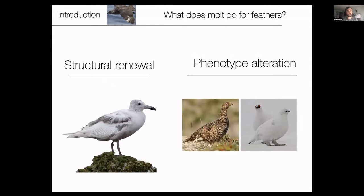A couple of things to establish when talking about molt: what does molt do for feathers? Molt, as we saw with the skua, can work for structural renewal — just replacing worn feathers. But molt can also serve for phenotype alteration. By phenotype I mean the outward appearance and structure. So does the color change? Does the shape or length of the feather change, or does the pattern change? So molt, in addition to renewing feathers, can also potentially change what a feather looks like or does.